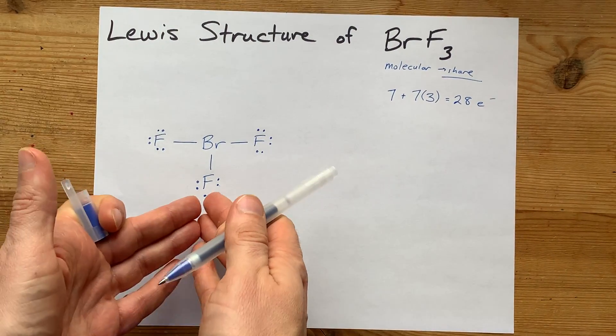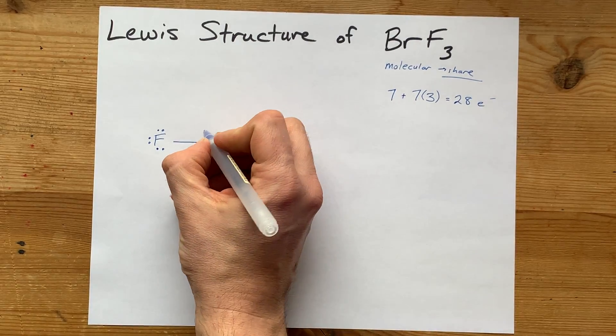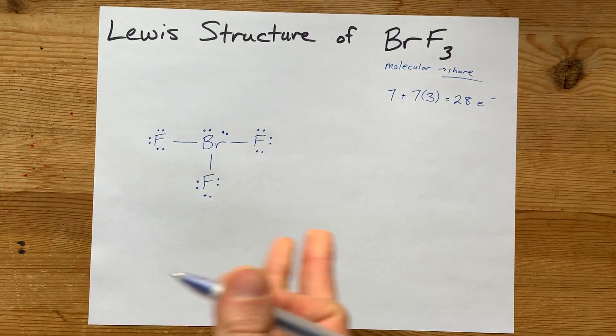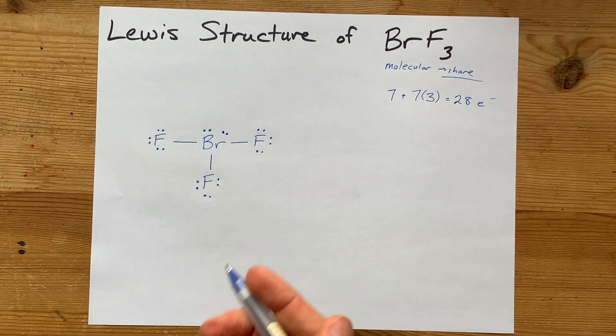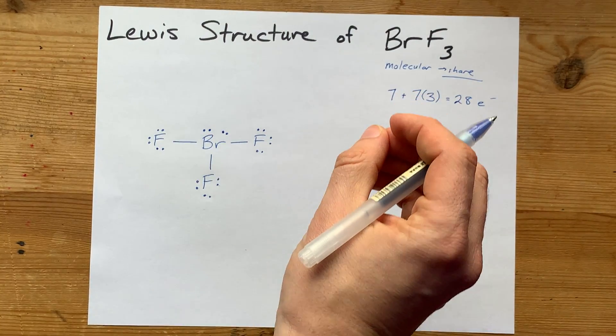What do I do with them once the octets of all my outer atoms are full? I dump them onto my central atom in pairs. So, I've got 2 extra lone pairs now on that bromine. This is the Lewis structure for BrF3.